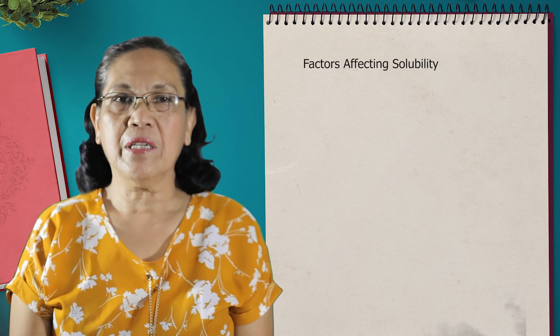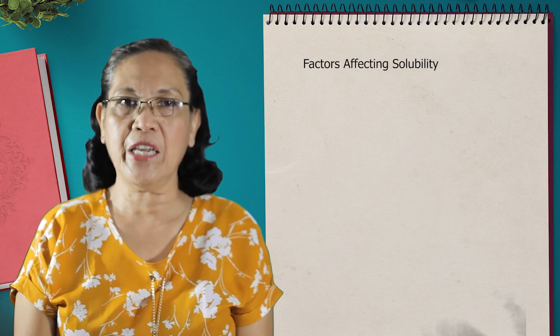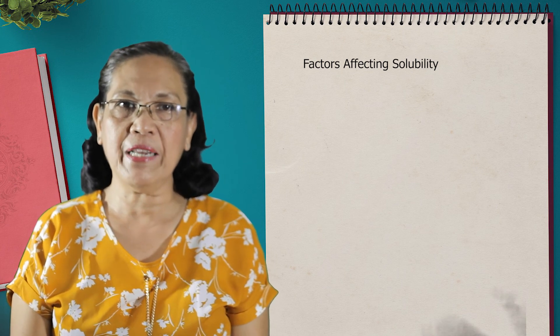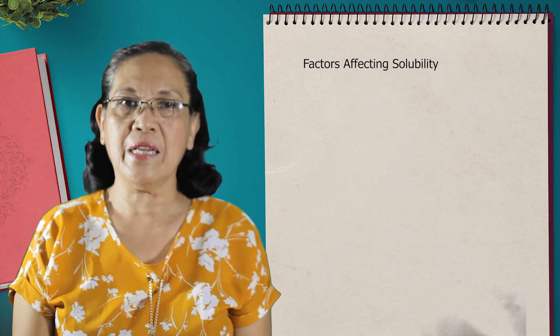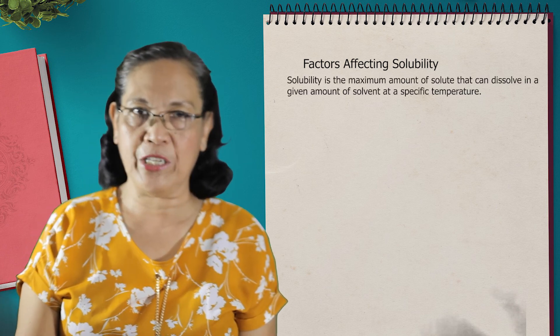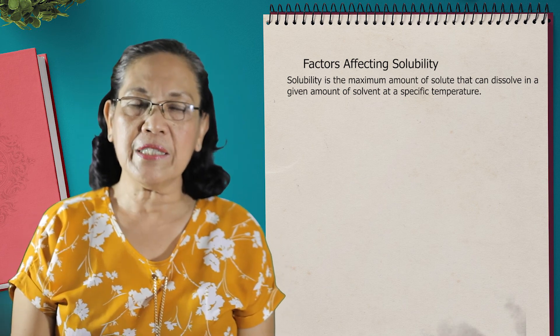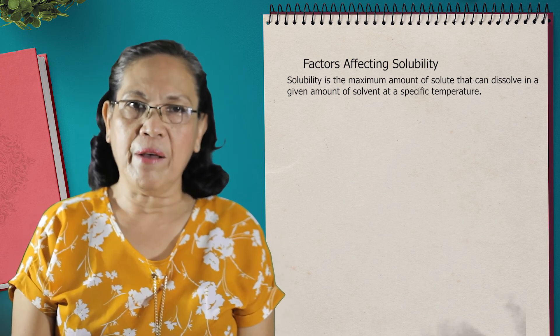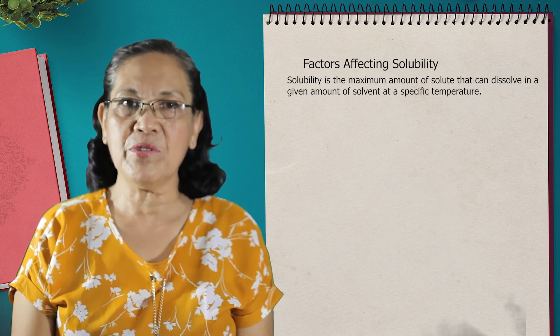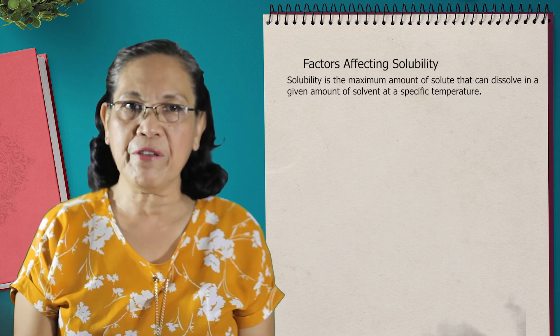Hi, good day. Welcome back to our class in chemistry. Today I will be discussing about the factors that affect the solubility of solute. Solute can have different solubilities in different solvents. By solubility we mean the capacity of a substance to be dissolved in a solvent, or it is the capacity of the amount of solute that can be dissolved in a given amount of solvent at a specific temperature.